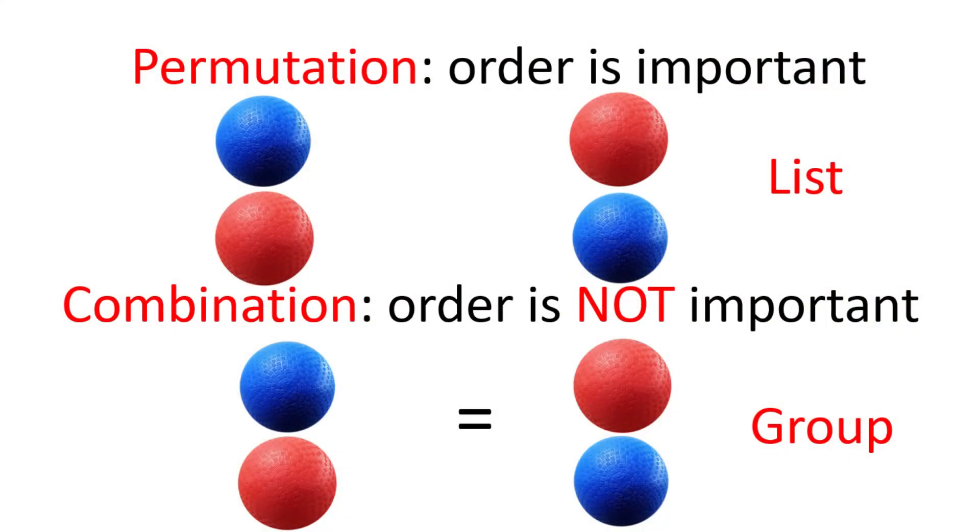Permutations and combinations are the different ways of choosing objects, without replacement, to form a subset. In permutations, we care about the order in which we pick them. In combinations, we care only about them as a group.